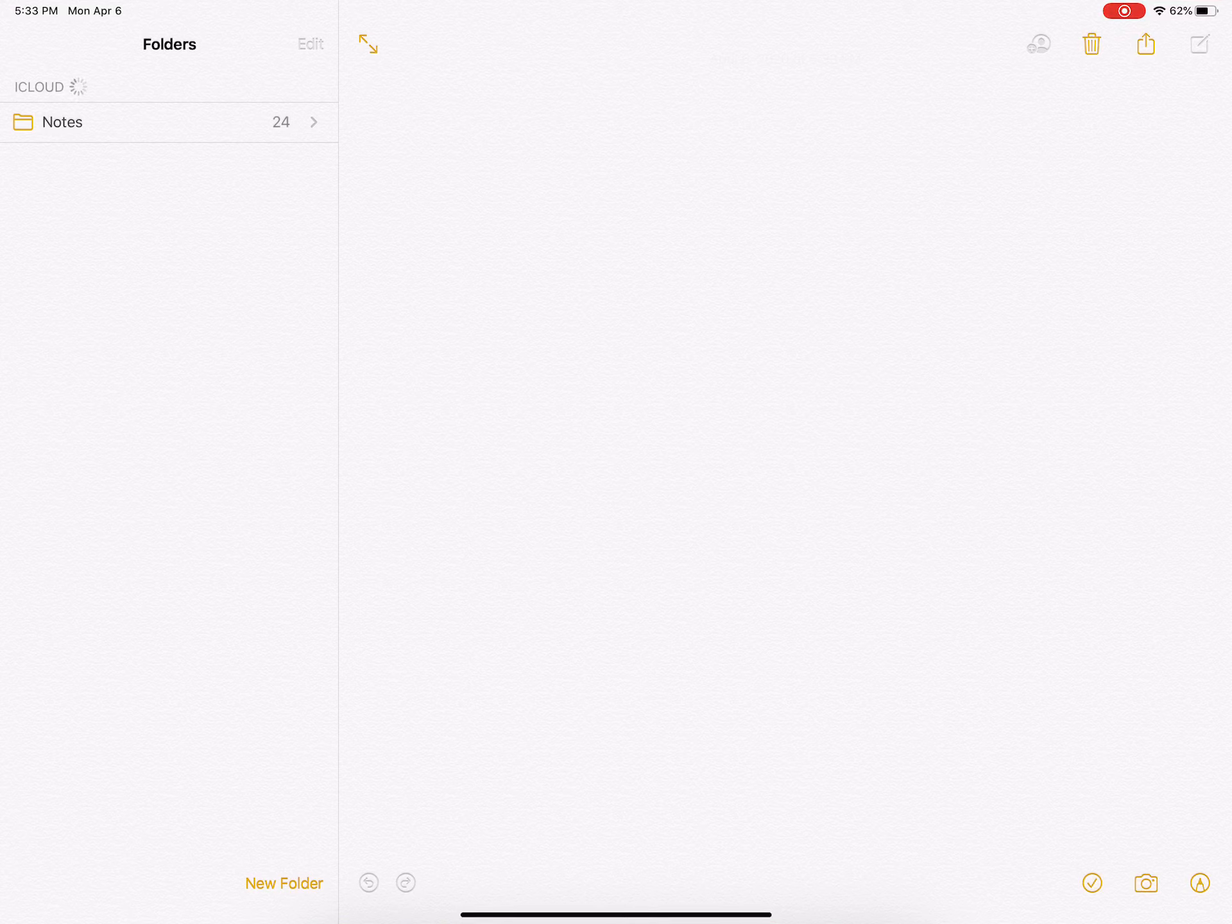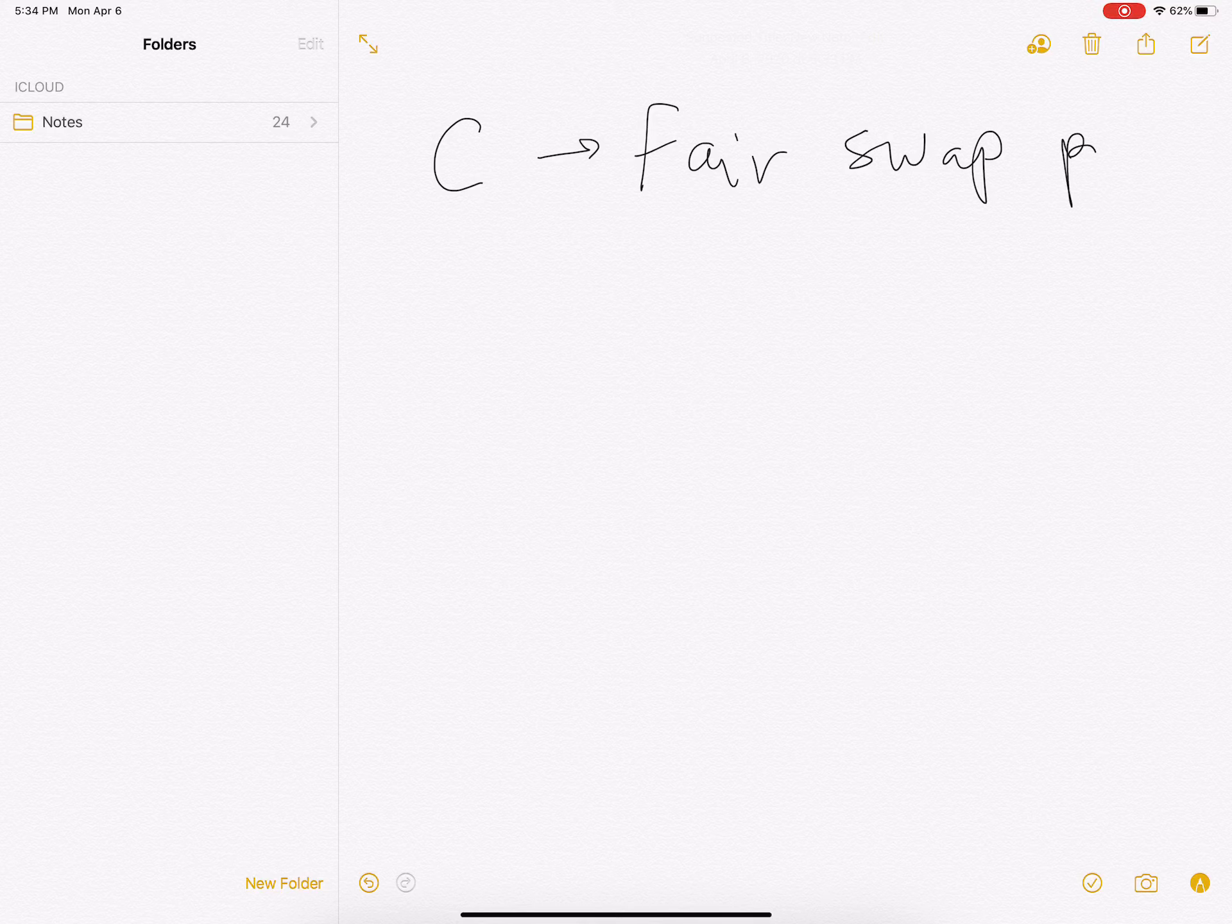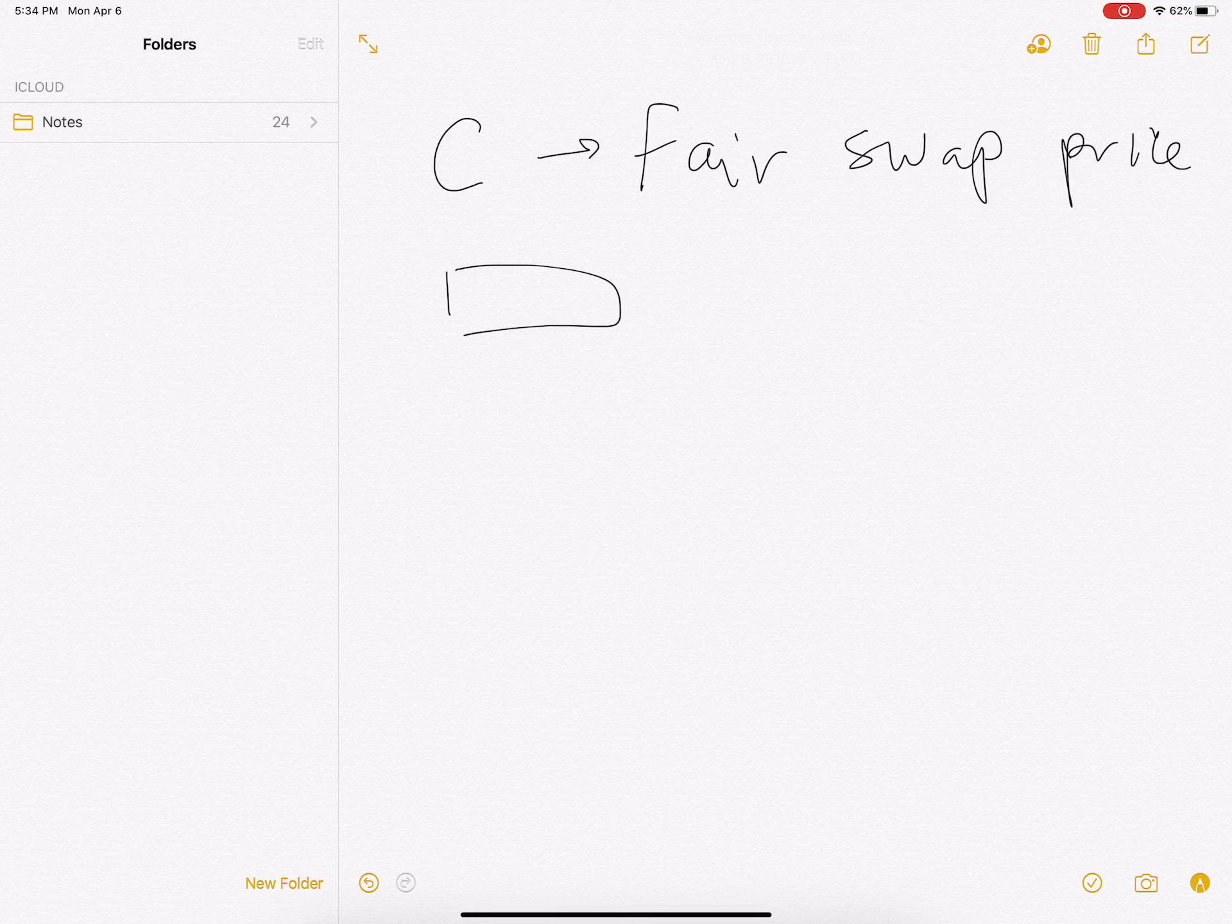Hello guys, this is my second attempt to record the videos that I promised to do. What I want to do is derive the formula for the fair swap price. Just to remind you, we have two parties: the payer that pays the constant coupon, and the receiver that pays LIBOR.